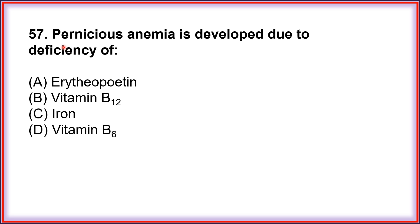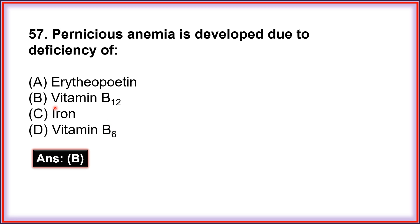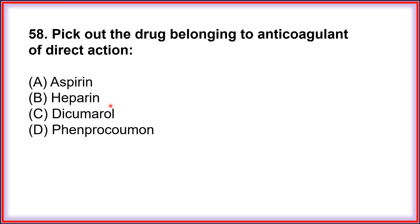Question number 57: Pernicious anemia is developed due to deficiency of — A. Erythropoietin, B. Vitamin B12, C. Iron, D. Vitamin B6. The correct answer is B. Vitamin B12; its deficiency causes pernicious anemia.